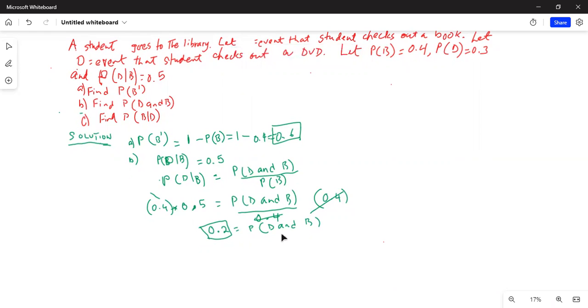Part C asks us to find probability of B given D. So probability of B given D has occurred equals probability of B and D divided by probability of D.